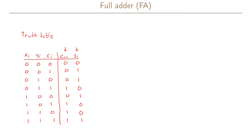This is the truth table for our full adder, and we can now write the Boolean expressions for the outputs. Starting with si: si is 1 when there is an odd number of inputs equal to 1, so it can simply be written as xi XOR yi XOR ci. For the carry bit ci+1, we will write this in a slightly unconventional but standard way.